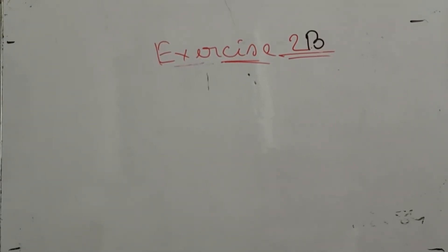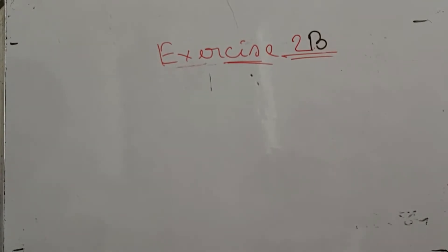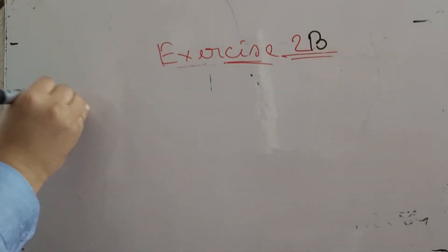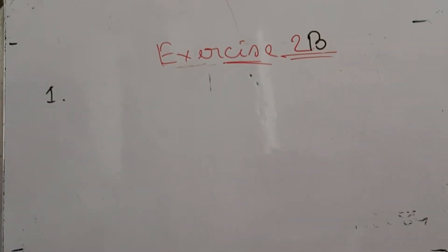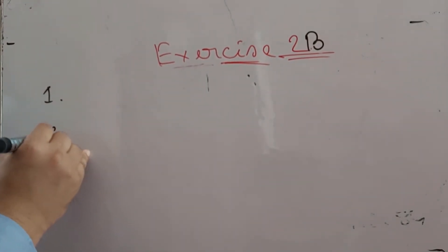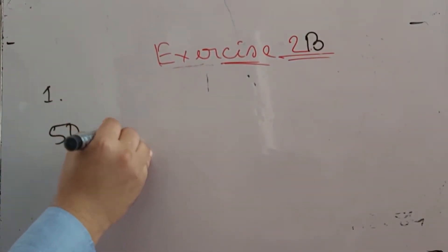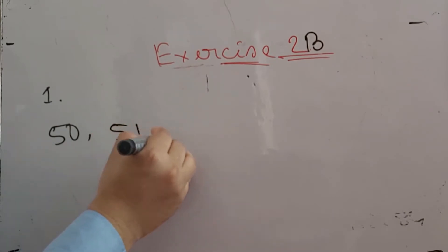Assalamu alaikum dear students. Today we will solve exercise 2b. Exercise 2b number 1: write down all the prime numbers between 50 and 60. So we have to find out the prime numbers from 50 to 60.